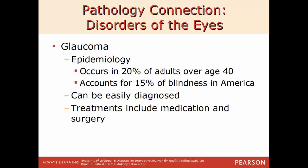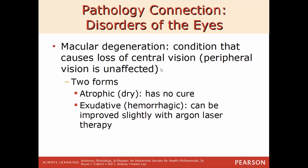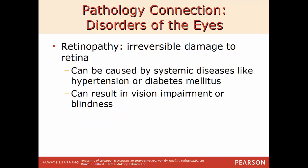Macular degeneration causes loss of central vision — peripheral vision is fine but the central vision directly in front of you is affected. There are two forms: atrophic or dry, which has no cure, and hemorrhagic or exudative, which can improve slightly with argon laser therapy. Retinopathy is irreversible damage to the retina, caused by systemic diseases like hypertension or diabetes, resulting in either vision impairment or complete blindness. Once the damage is done, it cannot be undone.